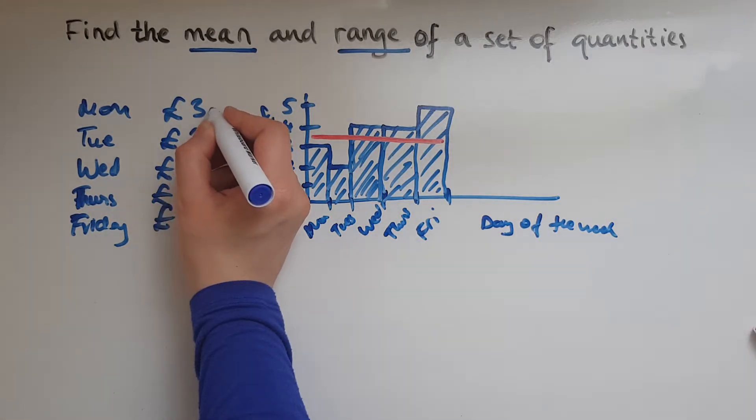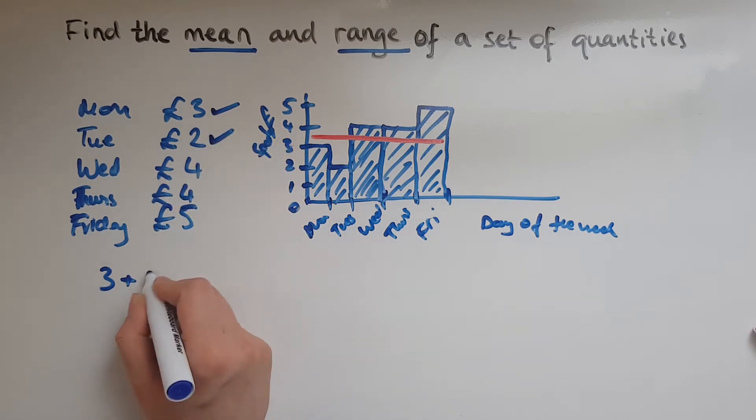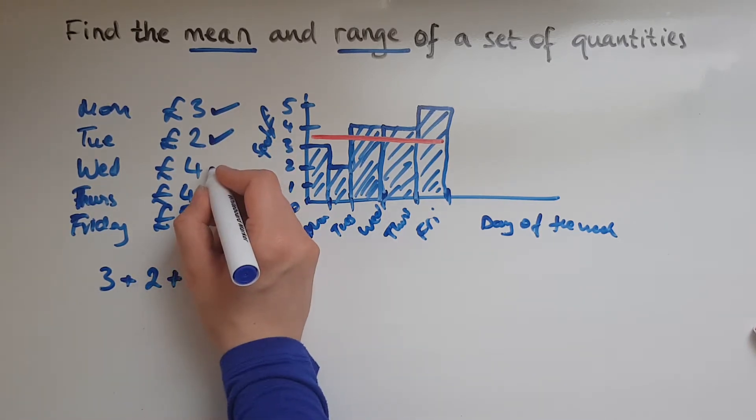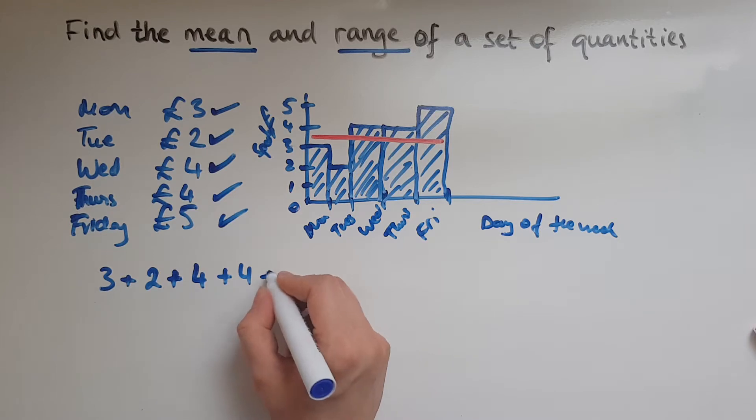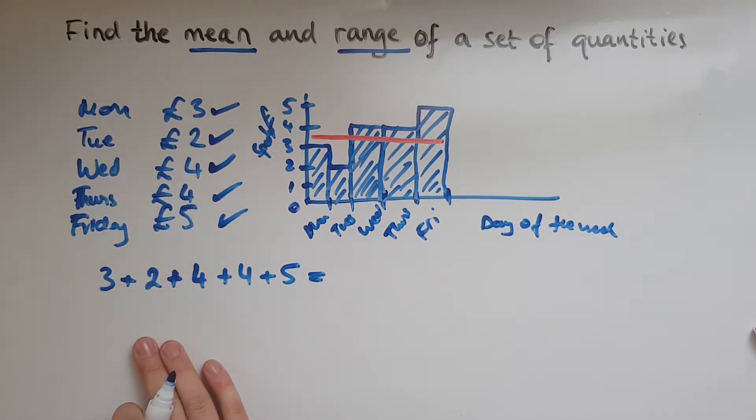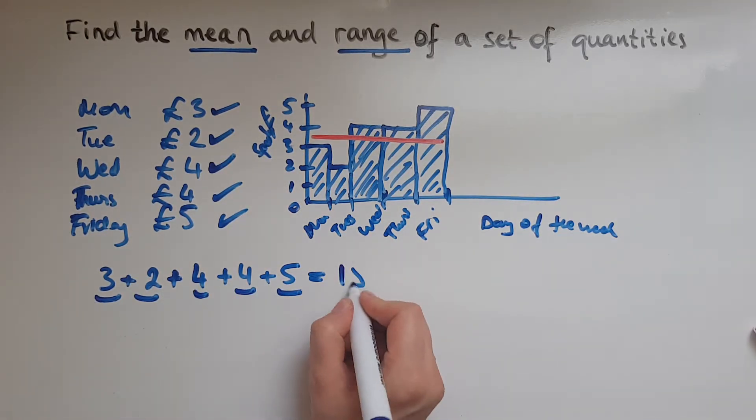So I'll go Monday, three. Tuesday, two. I'm ticking them as I go along so that I don't miss any out. Wednesday, four. Thursday, four. And Friday, five. So what is that? Three and two is five, and five is 10, 14, 18. So that is 18 pounds in total for the five days. Remember, there's five days that I'm going to work and spending rather than the seven days of the week, so you shouldn't get confused. And a good indication is looking at how many numbers you've actually input.